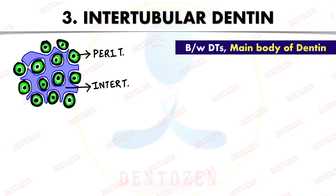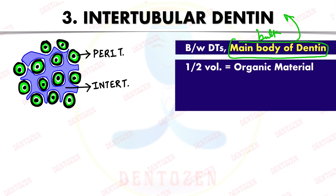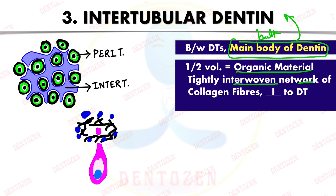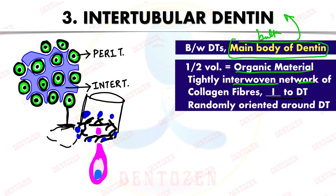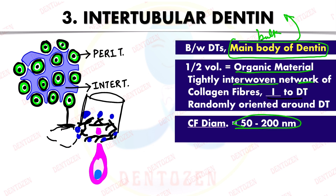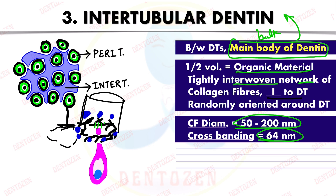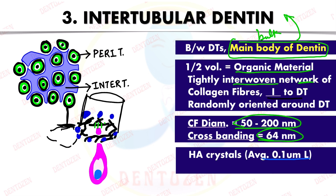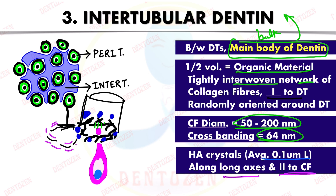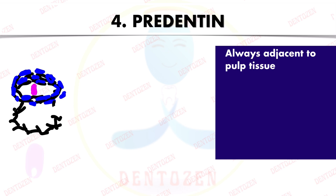Intertubular dentine — 'inter' means in between — is present between the dentinal tubules and forms the main body or bulk of dentine, which is a very important exam question. Half of the volume of this dentine is made up of organic material — collagen fibers which are tightly interwoven, lying perpendicular to the dentinal tubules and randomly oriented. The diameter of these fibers is 50 to 200 nanometers and they show cross-banding of 64 nanometers, typical of collagen. The mineral hydroxyapatite crystals of about 0.1 micrometer length are deposited along the long axis of these collagen fibers.